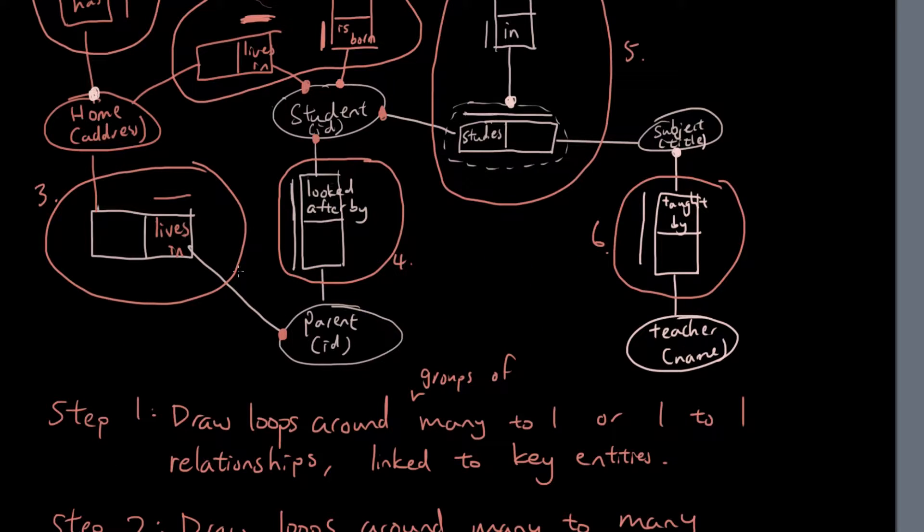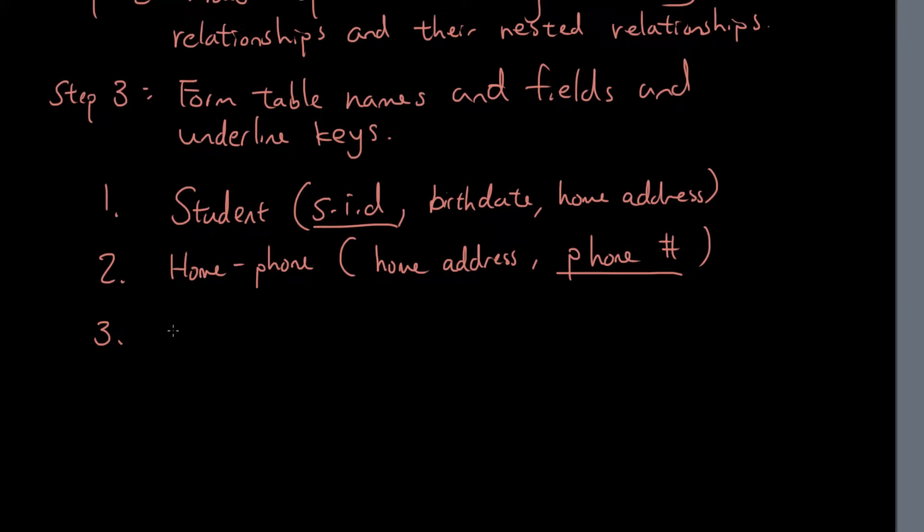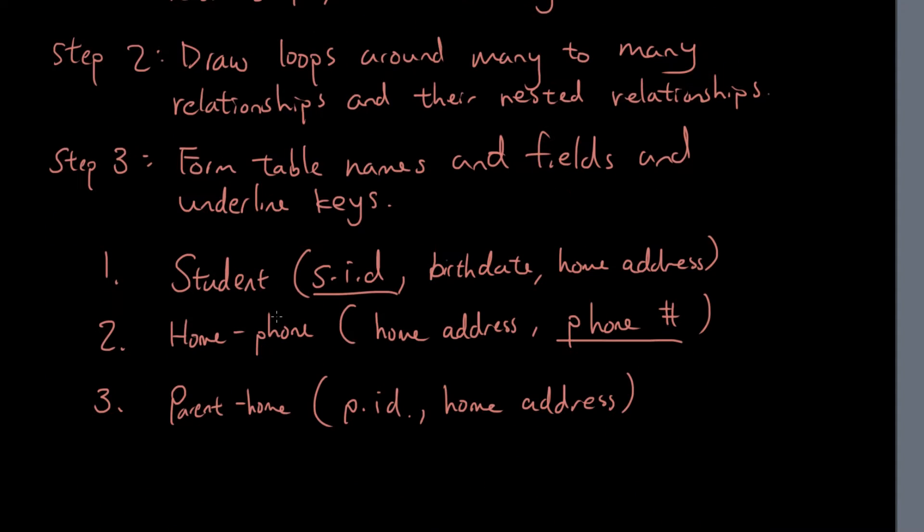Table number three, we got the parents ID and parents home address. So parent-home. We got the parent ID and the home address. And the key is obviously the parents ID.